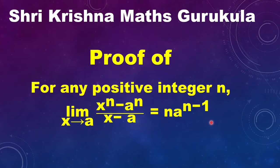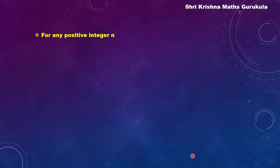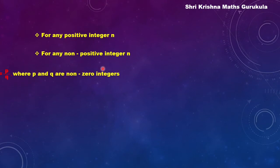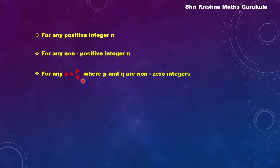In the NCERT textbook, the proof is given only for positive integer n, so in this video we will be proving only for positive integer n. This result holds good for any rational number — there is a separate proof for positive integers, for non-positive integers (that is, 0 and negative integers), and when n is of the form P by Q where P and Q are non-zero integers. We are learning the proof only for positive integers, as the NCERT textbook covers only that case.